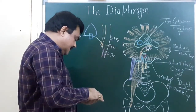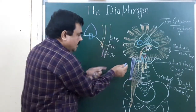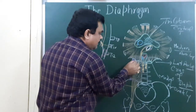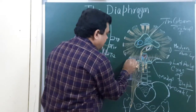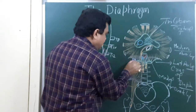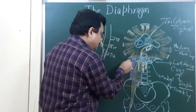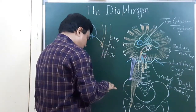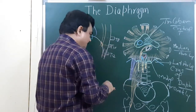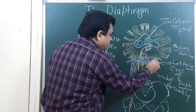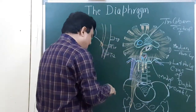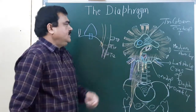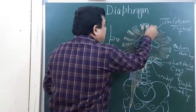Another structure: deep to the lateral arcuate ligament — this is the lateral arcuate arch — the subcostal vein, subcostal artery, and subcostal nerve pass deep to this lateral arcuate ligament.